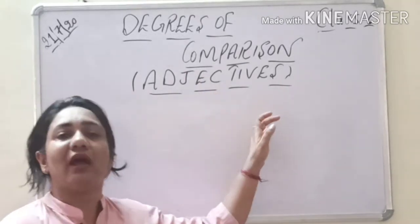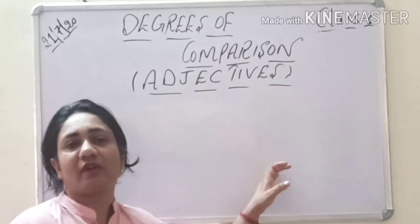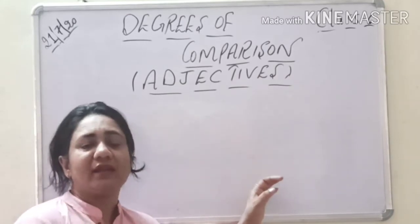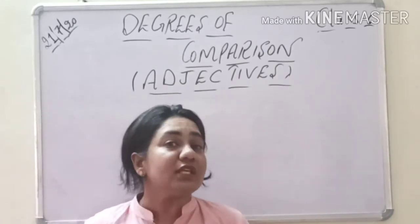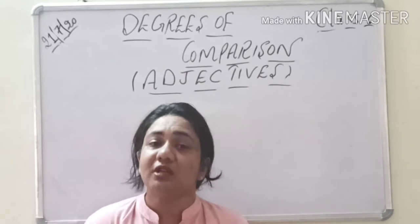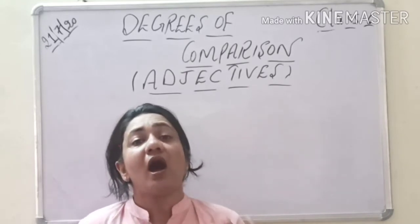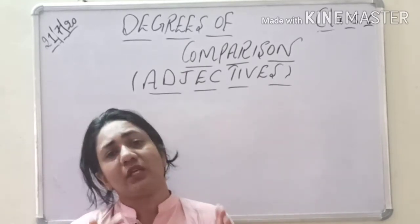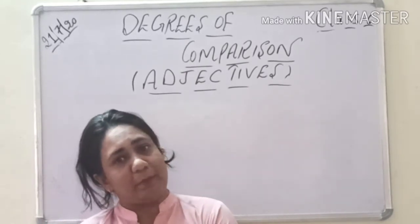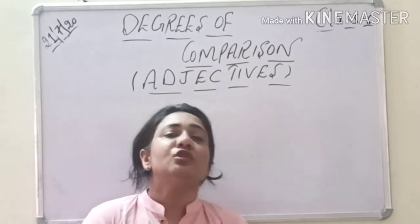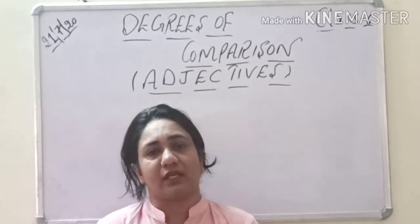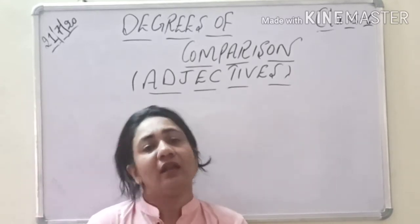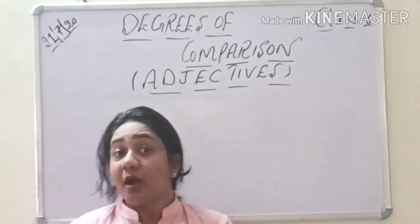We all know that we have three degrees of comparison: the positive, the comparative, and superlatives. Today we are going to learn how you can change a positive degree into a comparative degree and into a superlative degree. There are some rules for that, and we are going to learn those today.